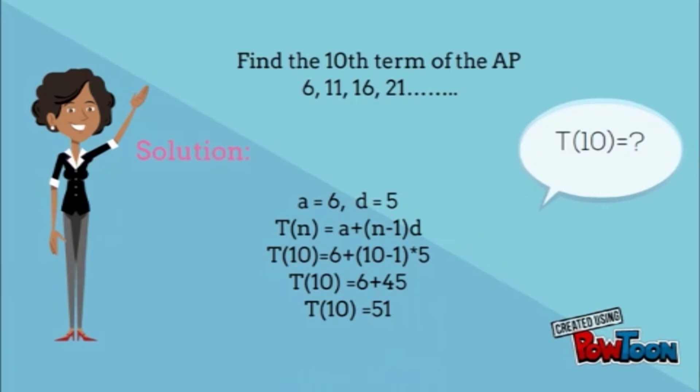So, formula for nth term is equal to a+(n-1)d. By substituting the values, T(10) is equal to 6+(10-1)×5. T(10) is equal to 6+45, which is equal to 51.